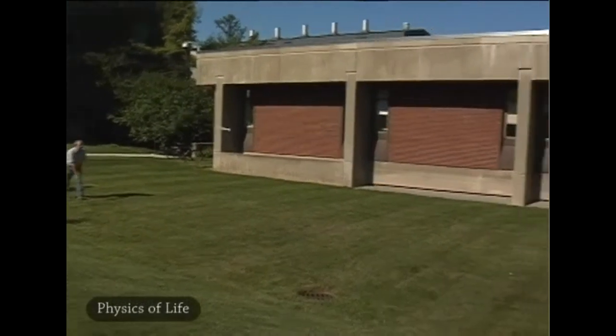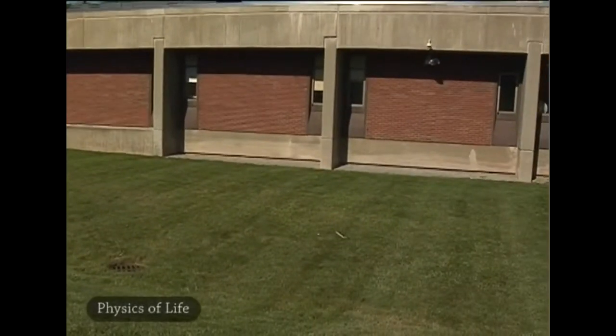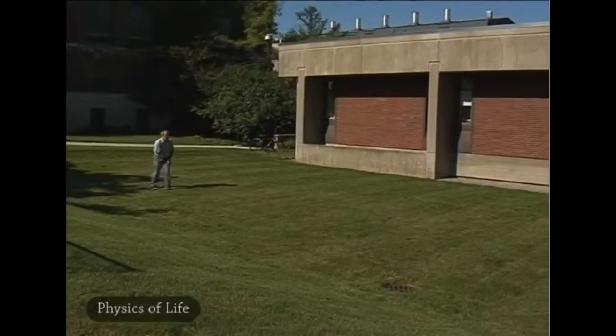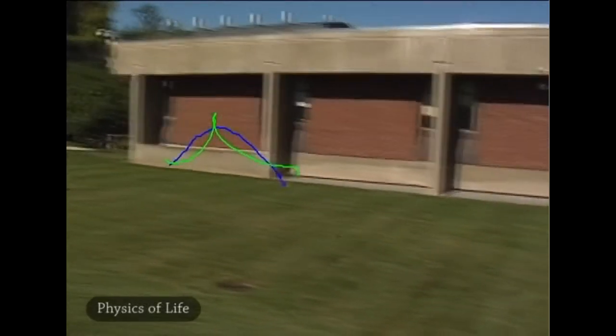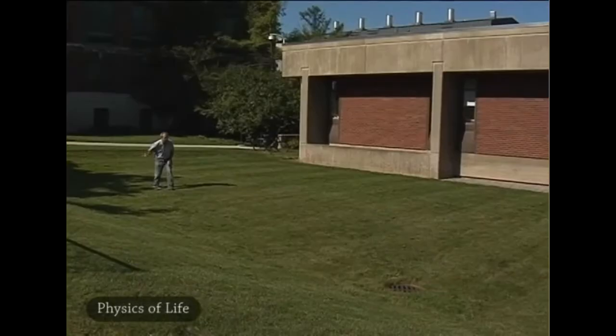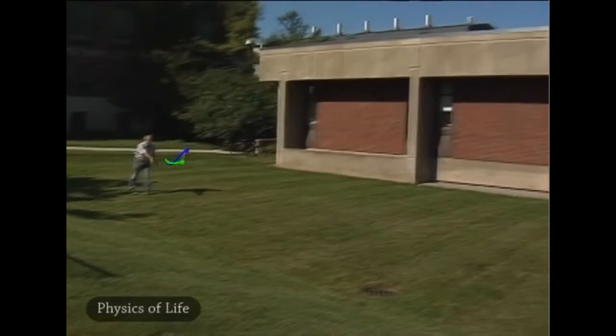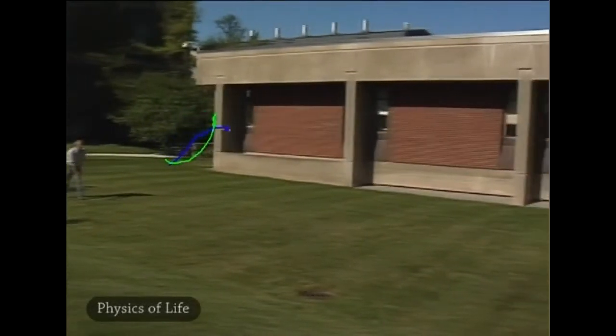This makes an object's rotational motion a bit complicated. Let's slow it down. If we track the motion of the center of mass in blue, we see that its motion follows a simple arc. But if we track the motion of the handle in green, its motion seems to be in fits and starts.